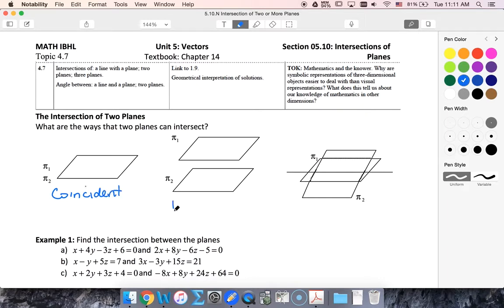They could be parallel and distinct, and in this case they would have no points of intersection. Or they are not parallel, in which case they would intersect in a line.